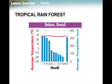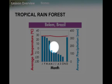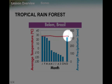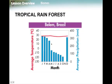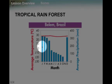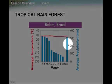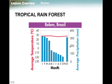A very common biome people are familiar with is the tropical rainforest. It's tropical because of its average temperature, which stays right under 30 degrees Celsius all year long. Notice there is no fluctuation in this. In the temperate biome, our temperature had a winter, a summer, a fall, and went right back into winter. The tropical rainforest has the same temperature year round.